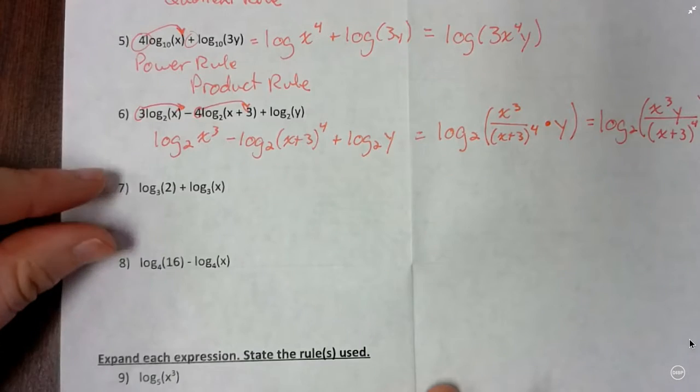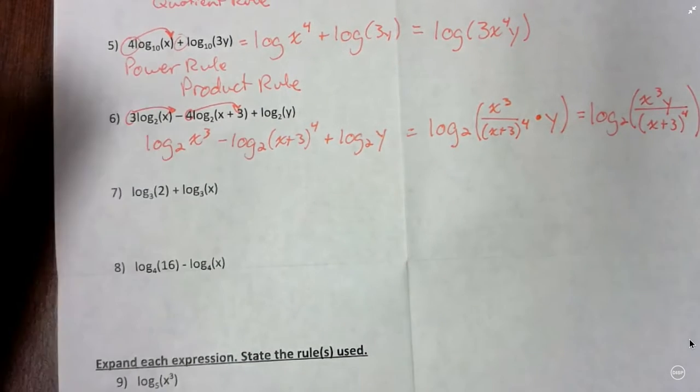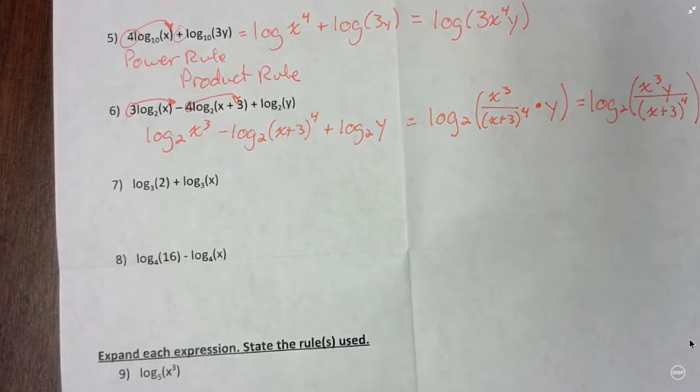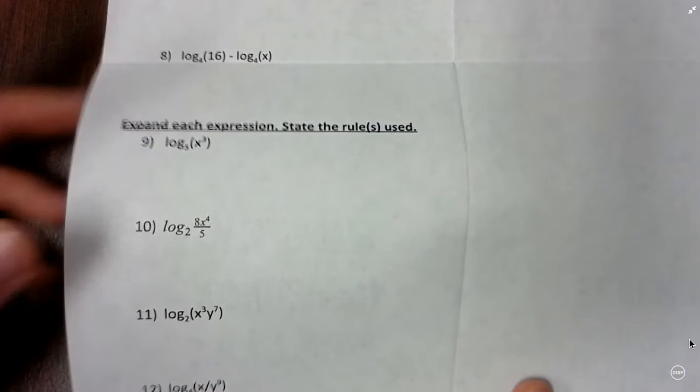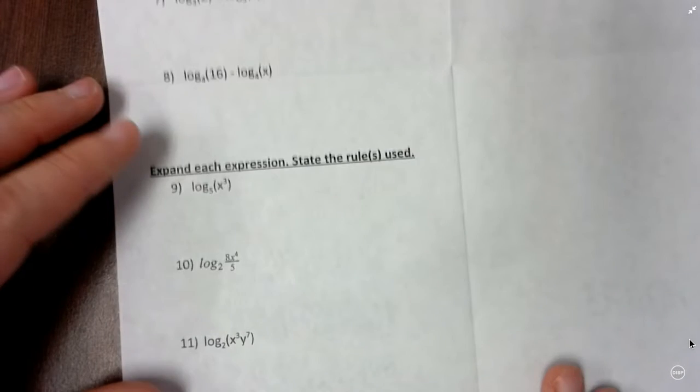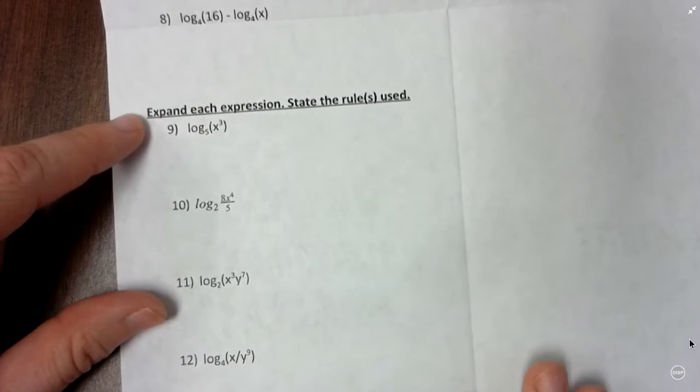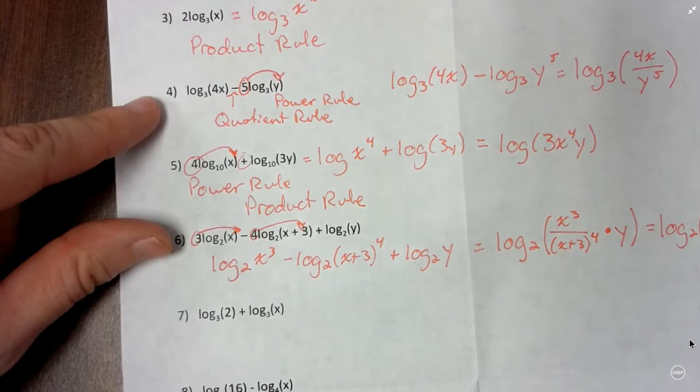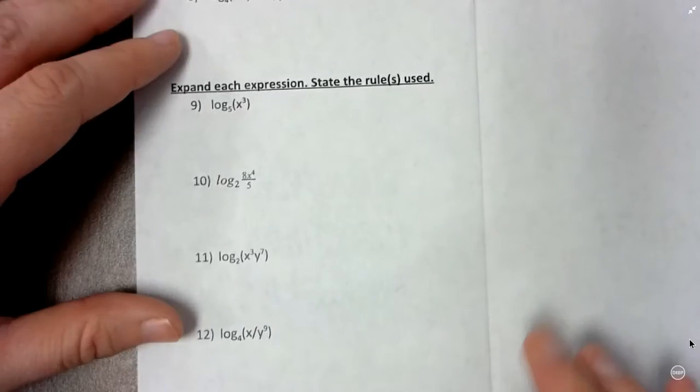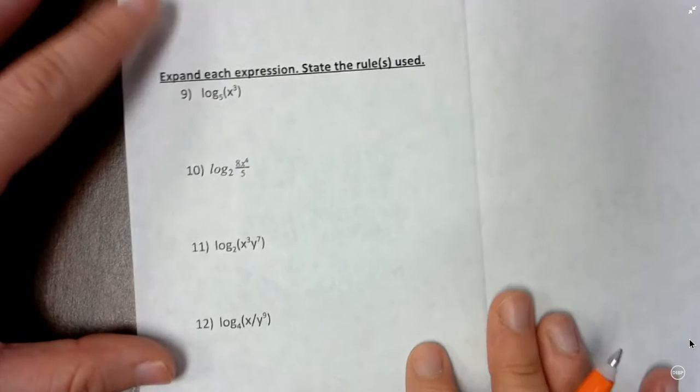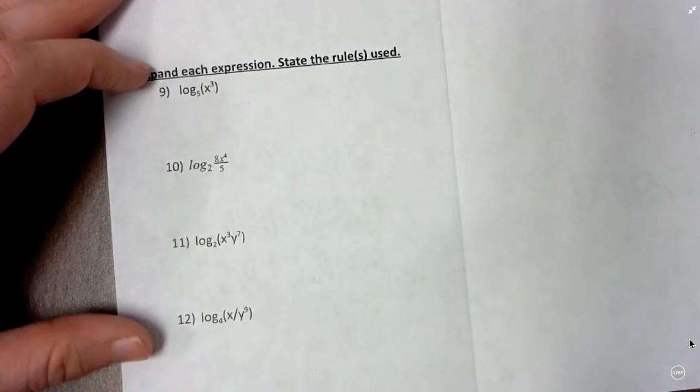So I would like you to try 7 and 8. Much simpler ones. And then for the last four, we're just going to practice going the other way a little bit. We're going to expand each one. This is not quite as useful as combining. So we're not going to do it very much. I just want you to have that skill in case you do go on to another math class that uses it, or in case you see it on the SAT or something, at least you've done it before.